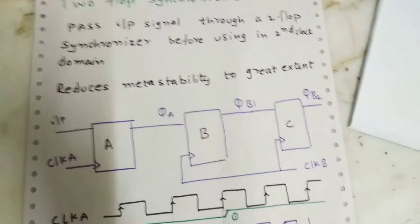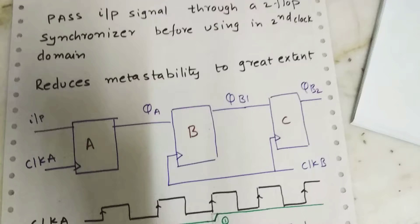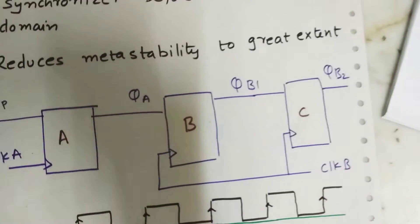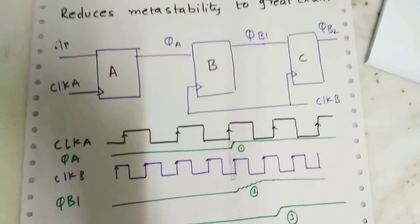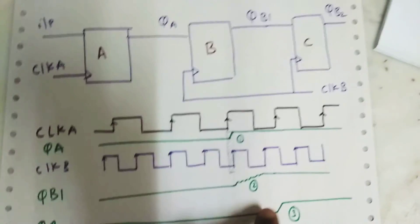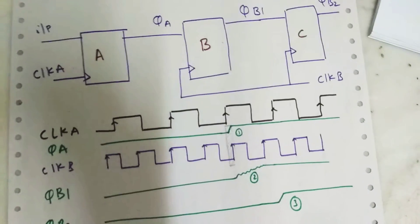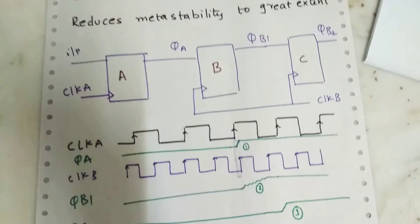So what happens when we pass this to a two-flop synchronizer? The output will be stable. So I'm going to show you with the timing diagram clearly. As you can see, the QB1 is unstable. We won't be able to judge the output, but we are giving it one long clock period to settle down.